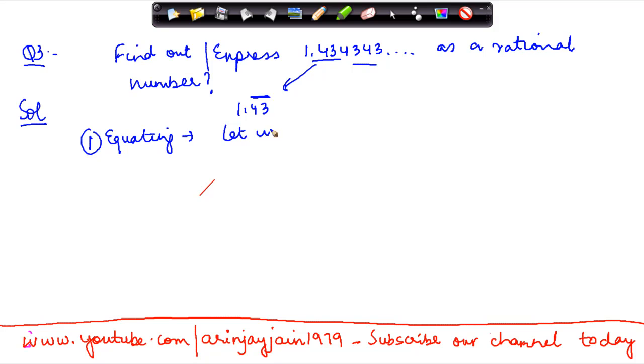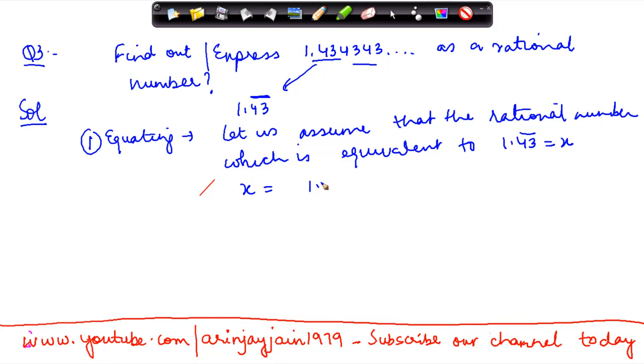Let us assume that the rational number which is equivalent to 1.43 repeating is equal to x. So x equals 1.43 repeating.